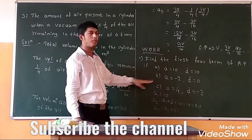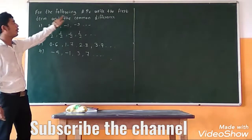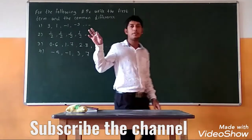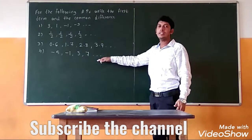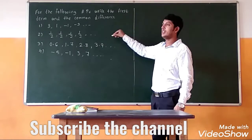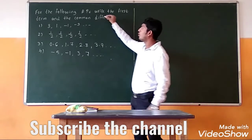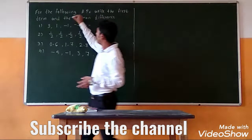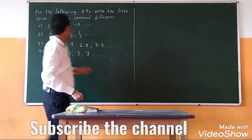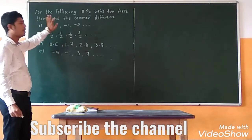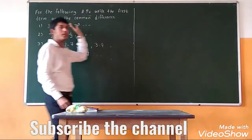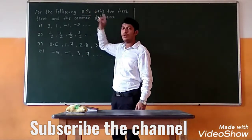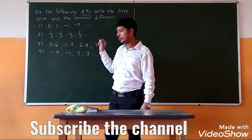For the following APs, write the first term and the common difference. All the given series are in arithmetic progression. If the given series is not in AP, then we cannot find the common difference because for each subtraction we would get a different value. Since it is given the series is AP, we only need one example to find the common difference to get the marks.